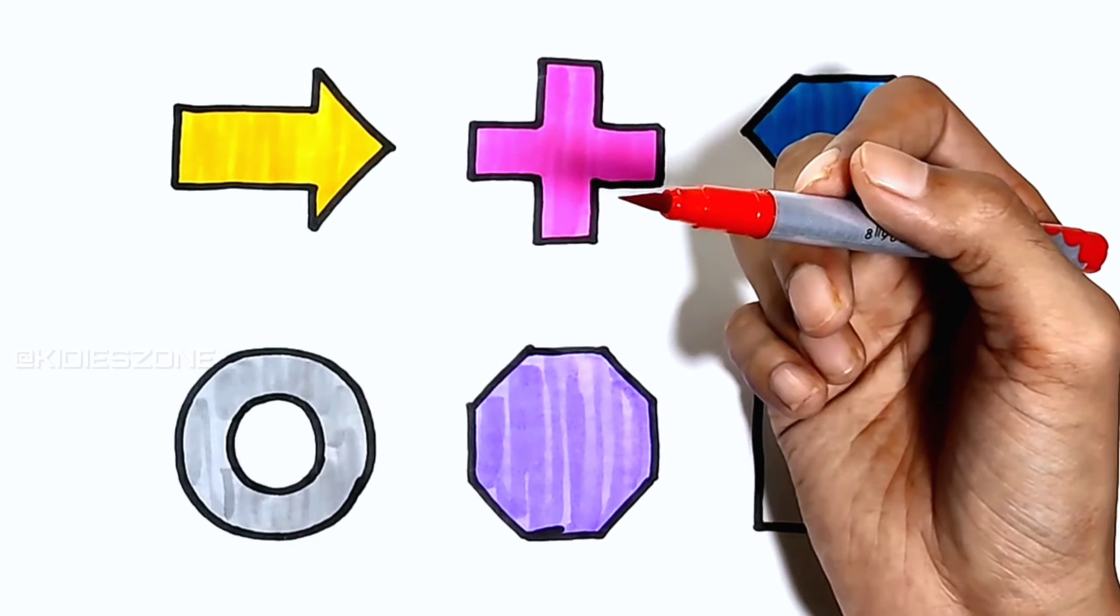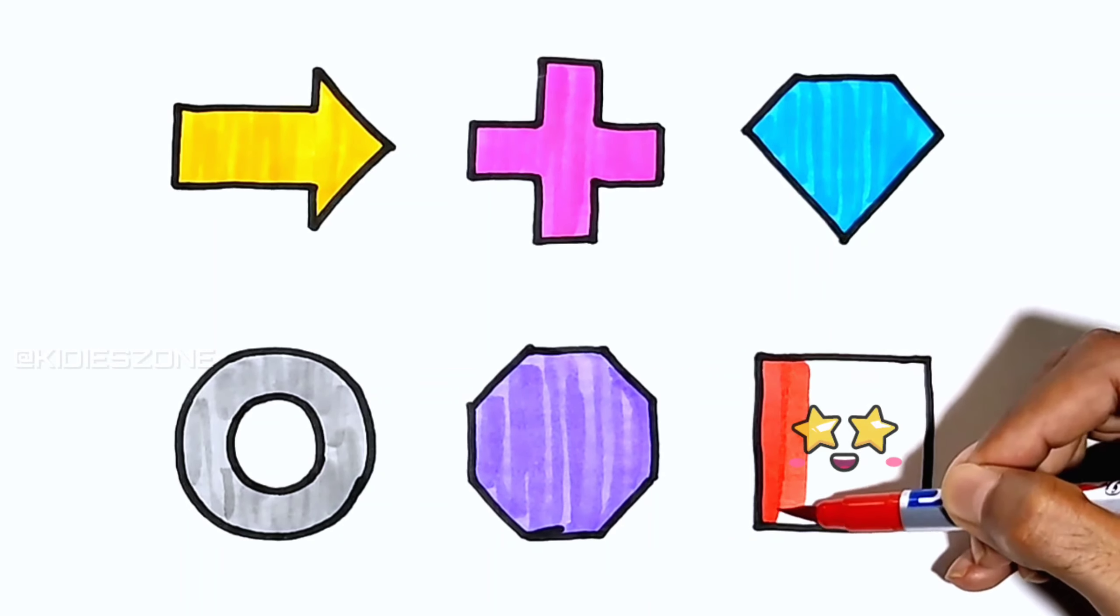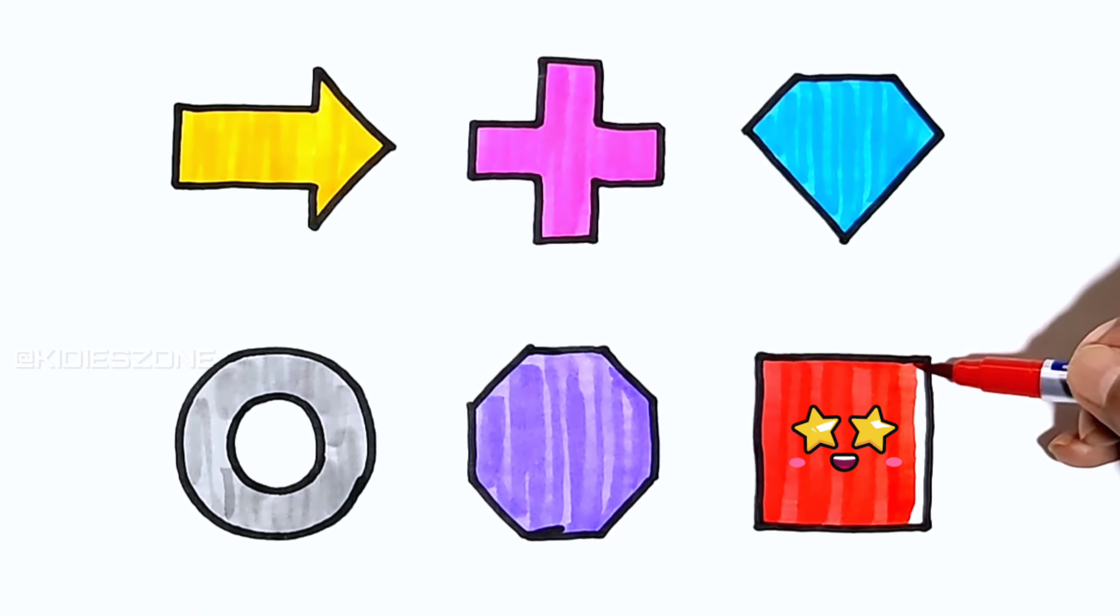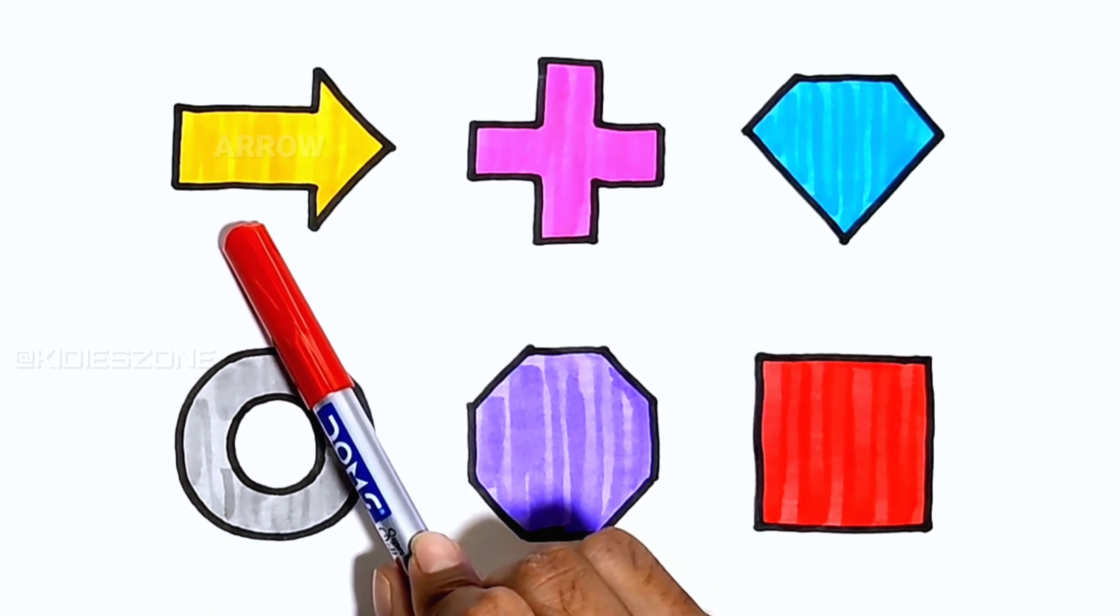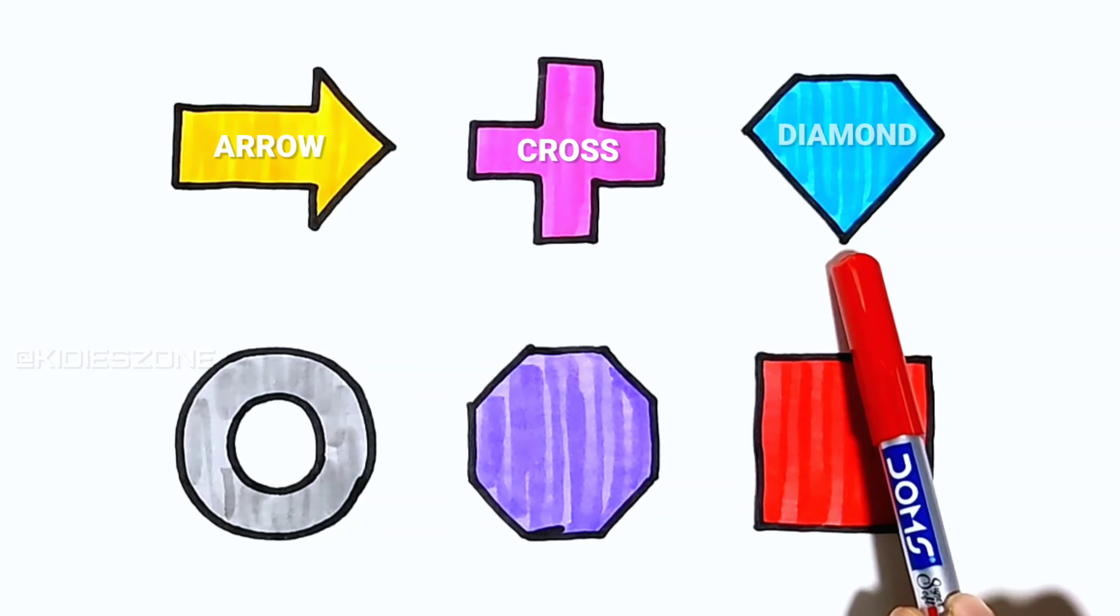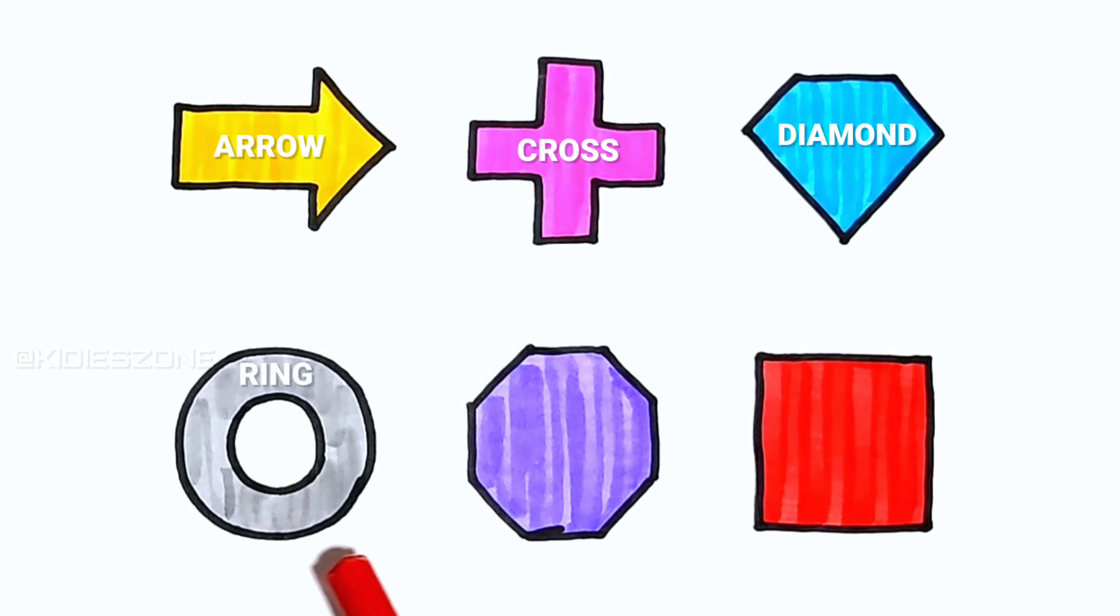Red. Arrow, cross, diamond, ring, octagon, square.